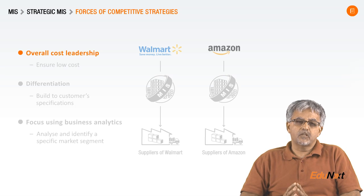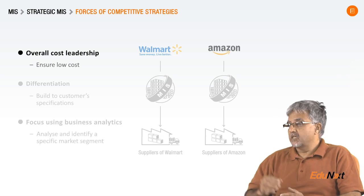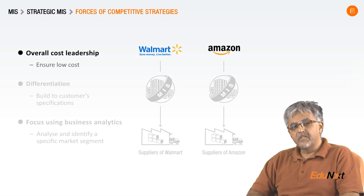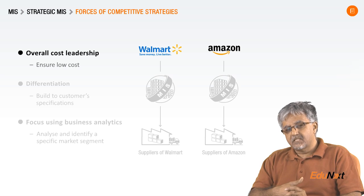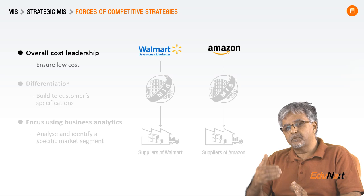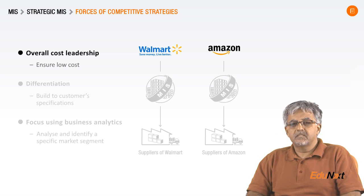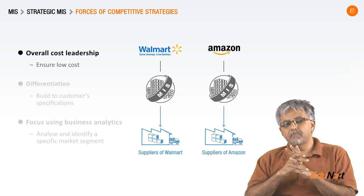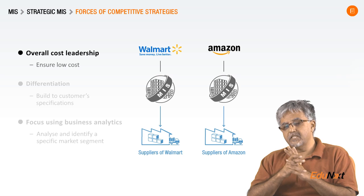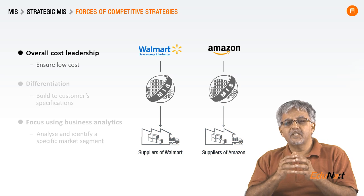One strategy is overall cost leadership — ensuring that your prices are always the lowest. In the case of Walmart as well as Amazon, they use their technology to ensure that, to the minute, they know what prices are selling in various marketplaces and they ensure their prices are the lowest at any point in time. Additionally, Walmart and Amazon connect their MIS to the management information systems of their suppliers, so suppliers know exactly what product is in stock and automatically supply their products to stores, meaning Walmart will never be out of stock, especially on products that sell a lot.